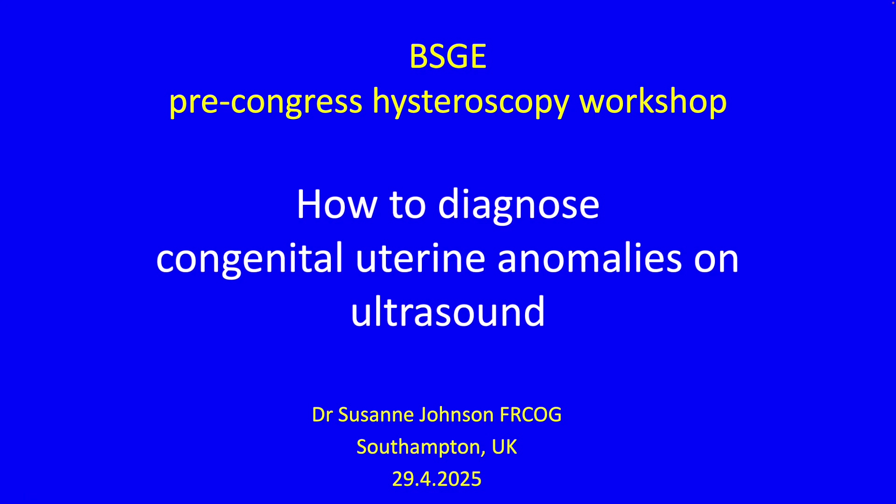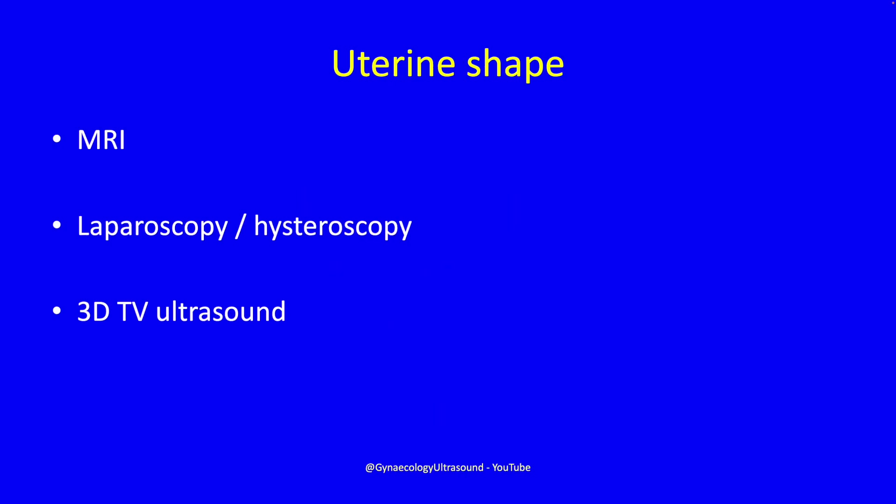This is a presentation on how to diagnose congenital uterine anomalies on ultrasound. My name is Suzanne Johnson and I'm a gynaecologist from Southampton. You can diagnose the uterine shape on MRI, or a combination of laparoscopy and hysteroscopy, or on 3D transvaginal ultrasound.